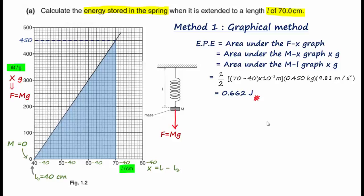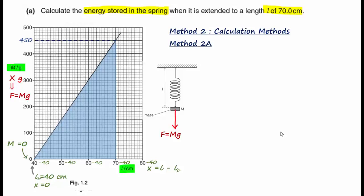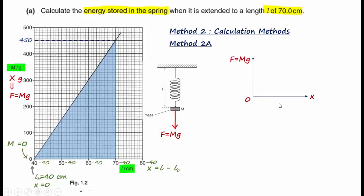We will now repeat Part A using the second method. In the second method, the equations can only be used if the spring obeys Hooke's law. The force of extension F is given by mg, and if we multiply each m by g and subtract 40 cm from the horizontal axis to get extension x, a graph of force versus extension yields a straight line. At L equals 40 cm, x equals zero, confirming F is proportional to x and the spring obeys Hooke's law.